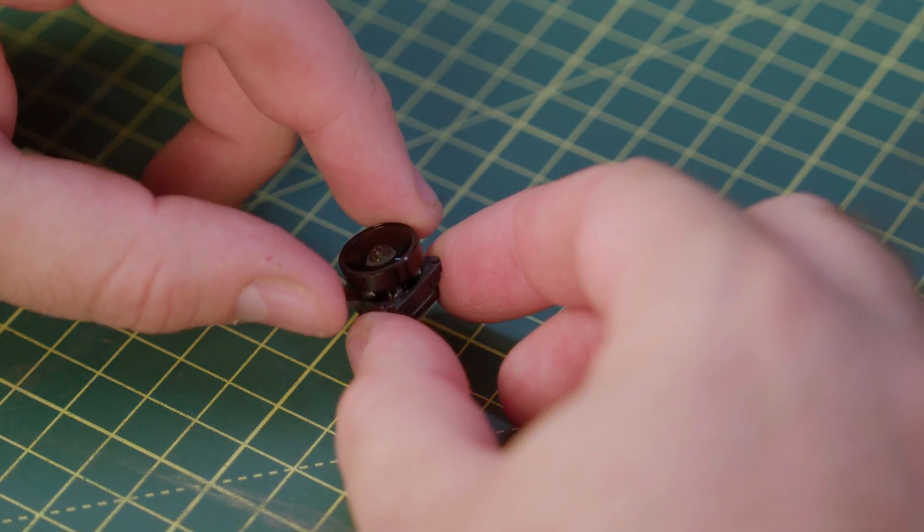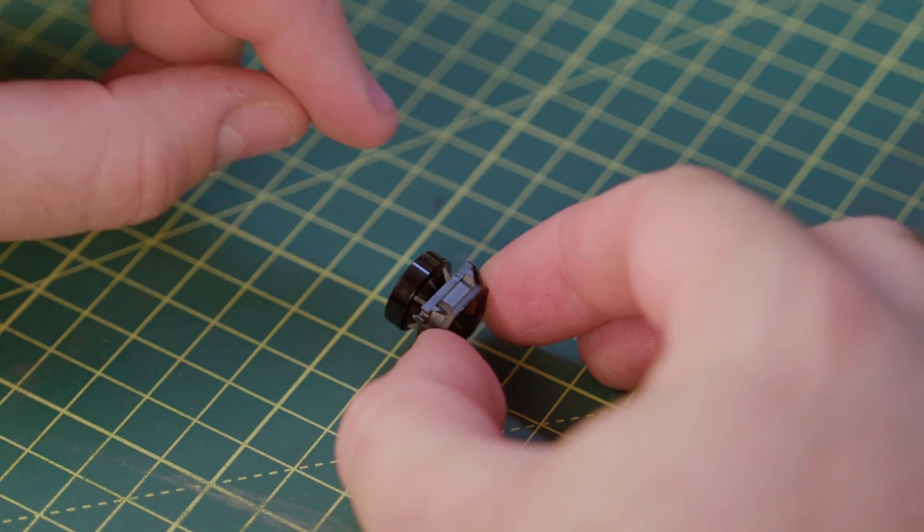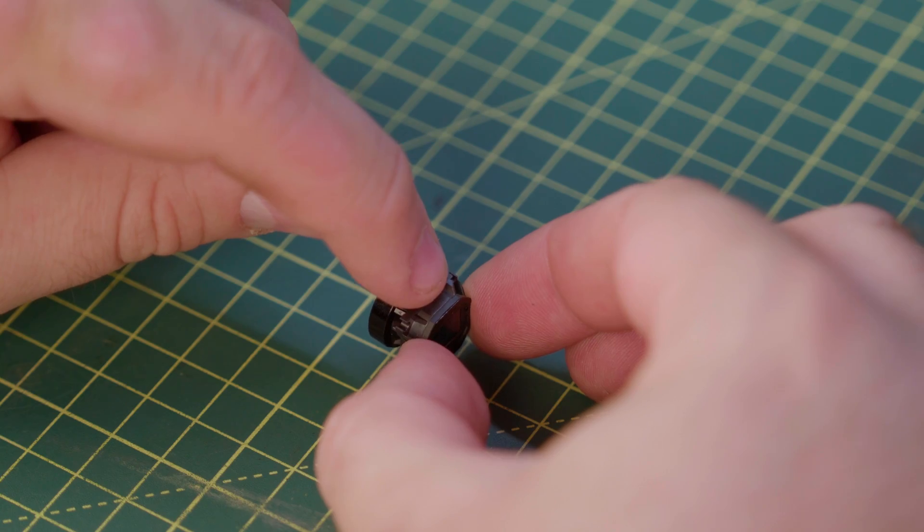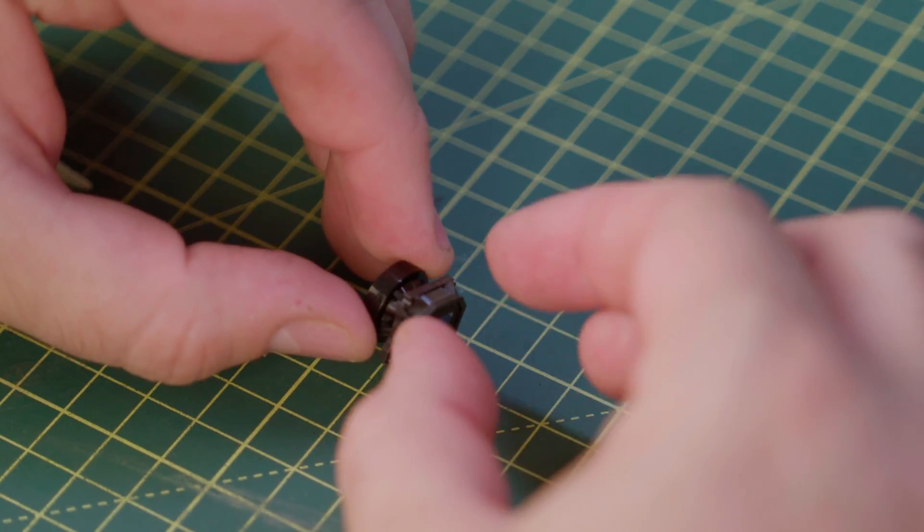Now the camera, we're going to need to disassemble it. It's made up of three pieces: the lens, the body with the threads, and the UV filter at the back. And we're going to need to take it all apart.